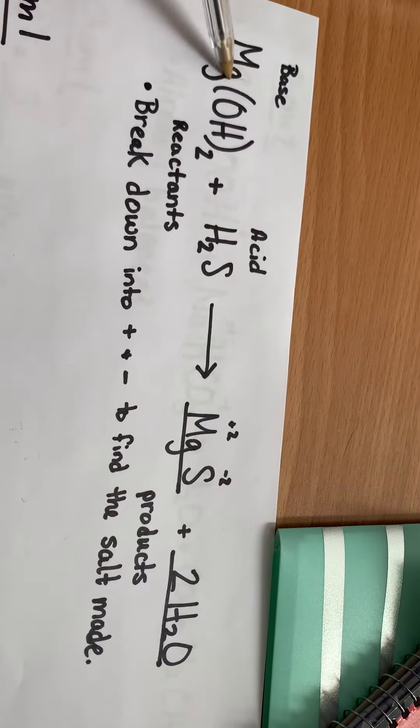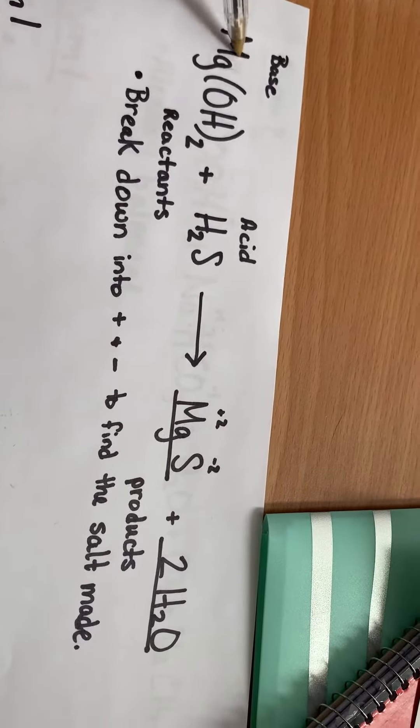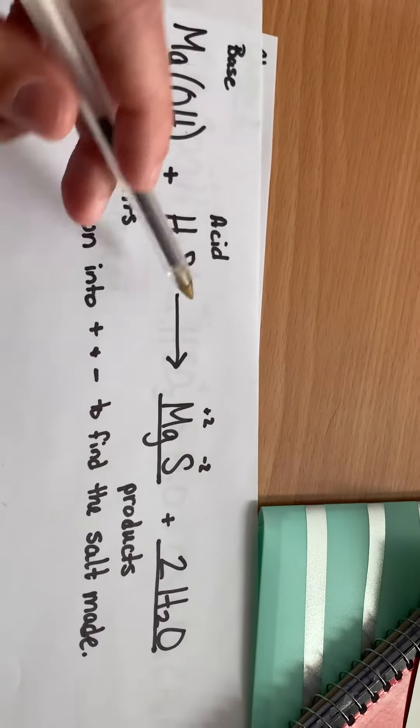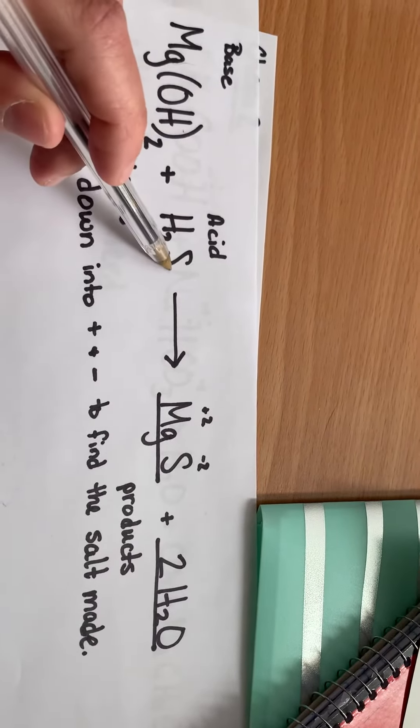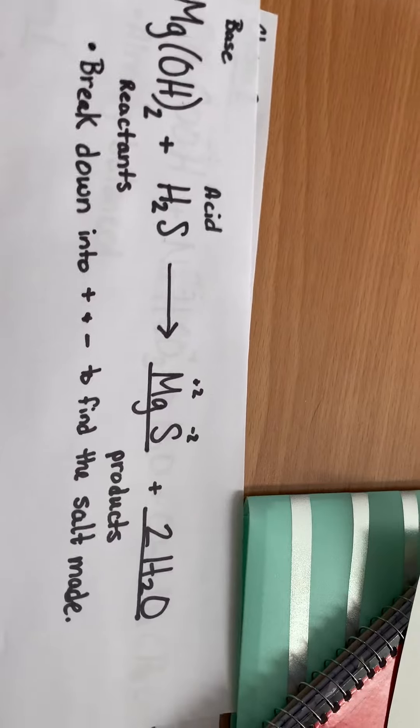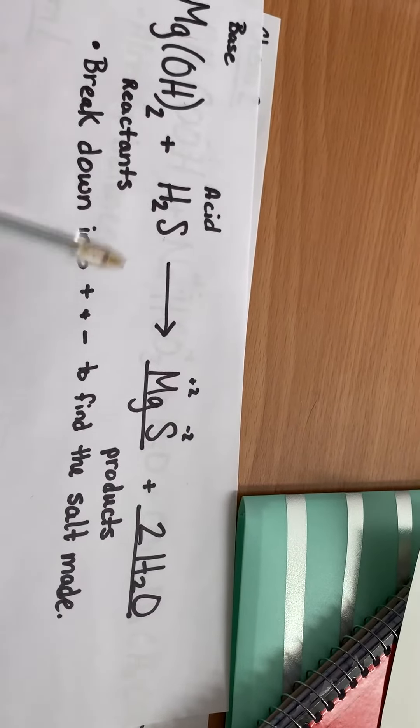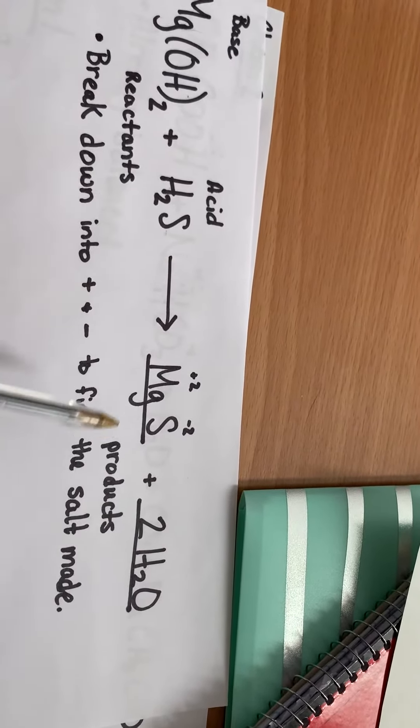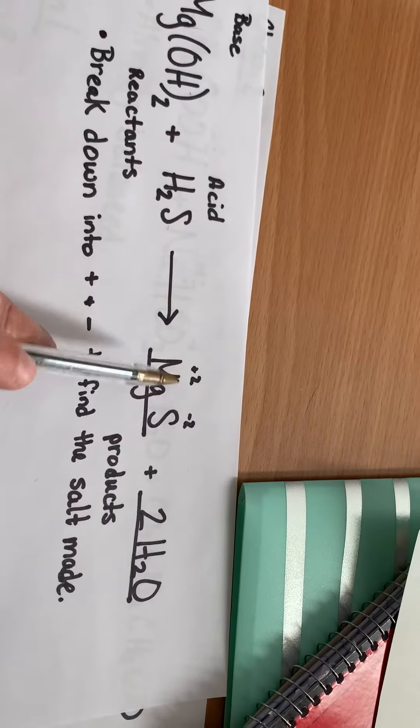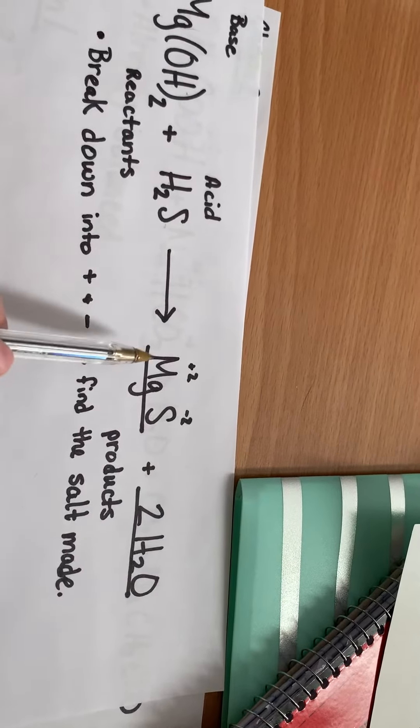You split these up into their positive and negative halves. So my positive magnesium, my negative hydroxide, positive hydrogen, negative sulfur, and opposites attract. So my salt is going to be the positive magnesium with the negative sulfur. Magnesium is a plus two, and sulfur is a negative two, so it's just MgS.